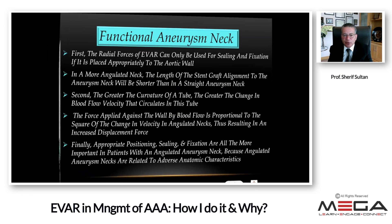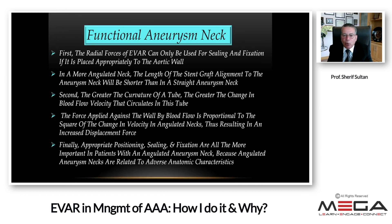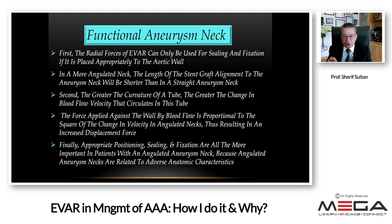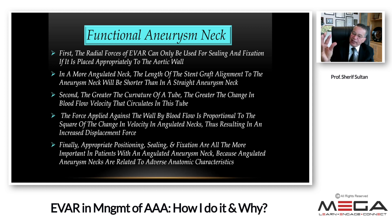Increasing the functional landing zone is the key to EVAR success. The radial force of the stent graft can only be used for sealing and fixation if it is placed properly against the aortic wall. In a more angulated neck, the length of the stent graft aligning with the aneurysm neck will be shorter than in a straight neck. Furthermore, the greater the curvature of a tube, the greater the change in blood flow velocity — the force applied against the wall is proportional to the square of the change in velocity, resulting in an increased displacement force. Appropriate positioning, sealing, and fixation are all the more important in patients with an angulated aneurysm neck.